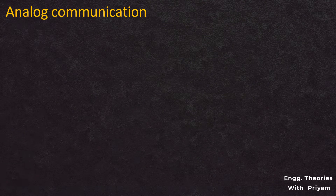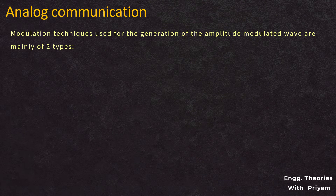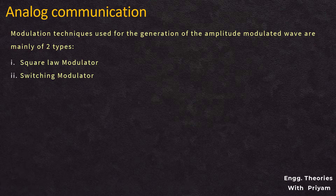Modulation techniques used for the generation of an amplitude modulated signal are of two types: square law modulator and switching modulator. In this lecture, we will understand what the square law modulator is and how it functions as an amplitude modulated signal generator.